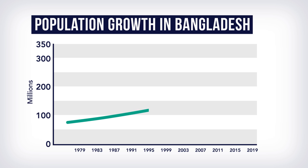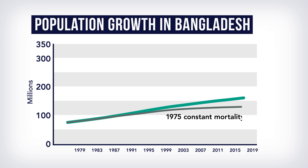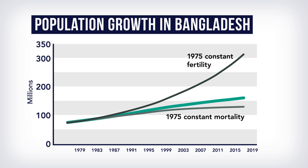The population in Bangladesh has grown since 1975 from 65 million to 165 million in 2017 — an increase of 100 million in 42 years. If the mortality conditions in 1975 had remained the same, the total population would have been 132 million. On the other hand, if the fertility conditions in 1975 had remained the same, the total population now would have been 320 million.